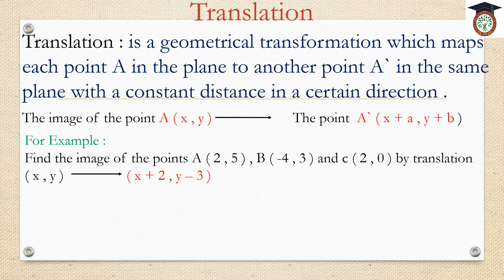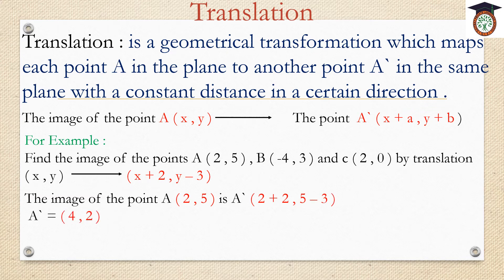For example, find the image of the points A(2, 5), B(-4, 3), C(2, 0) by translation. The rule of translation is (x plus 2, y minus 3), so for each point we will add 2 to the x coordinate and subtract 3 from the y coordinate. The image of point A(2, 5) is A dash: 2 plus 2 and 5 minus 3.